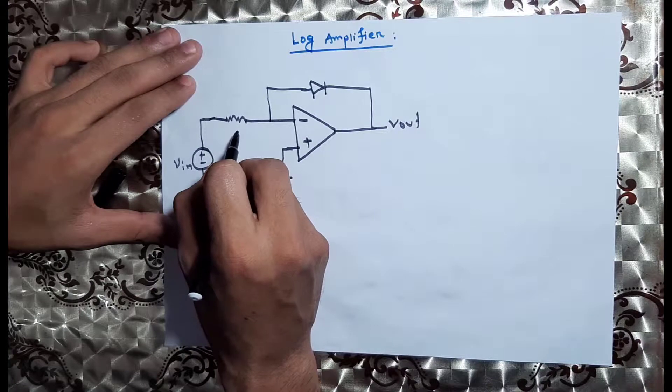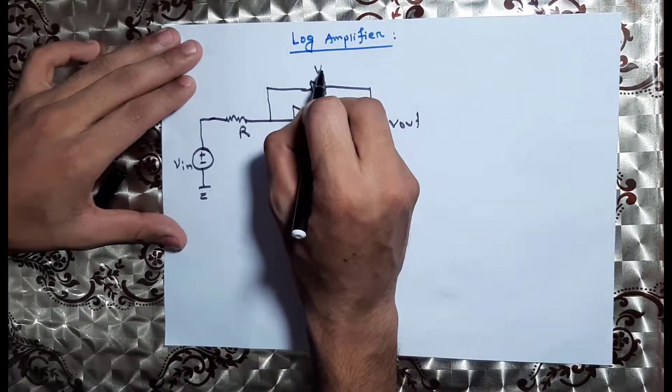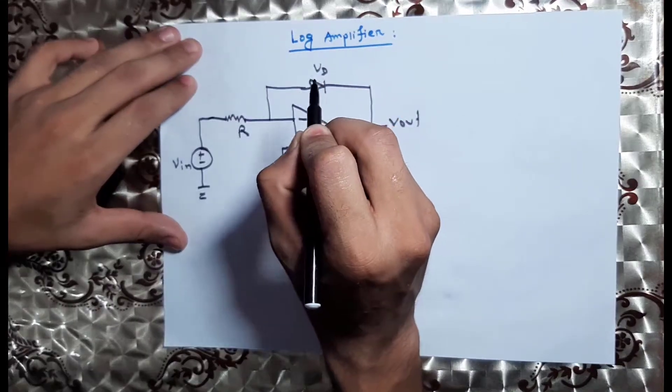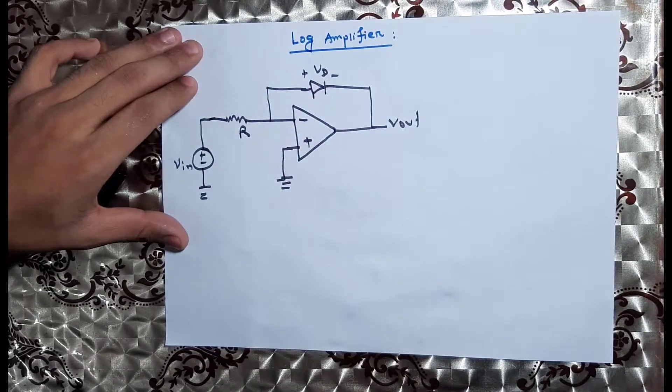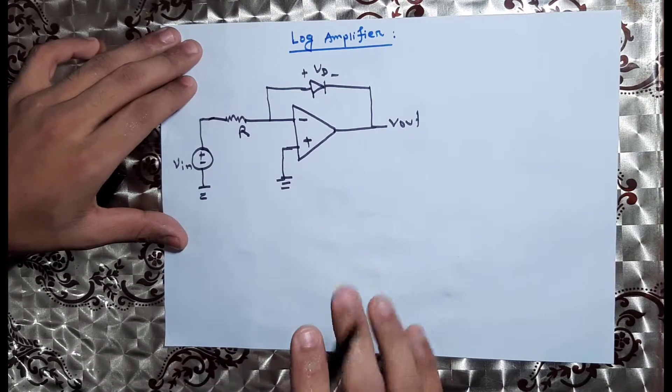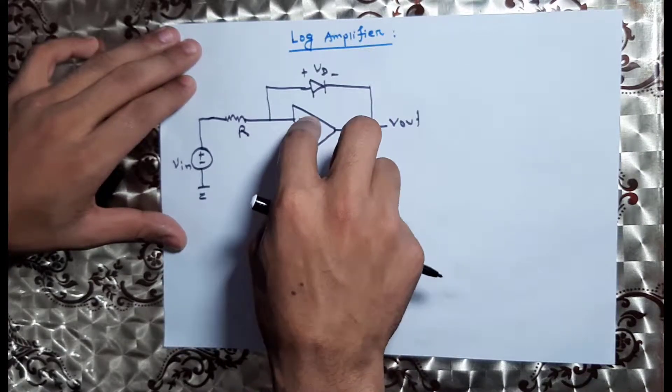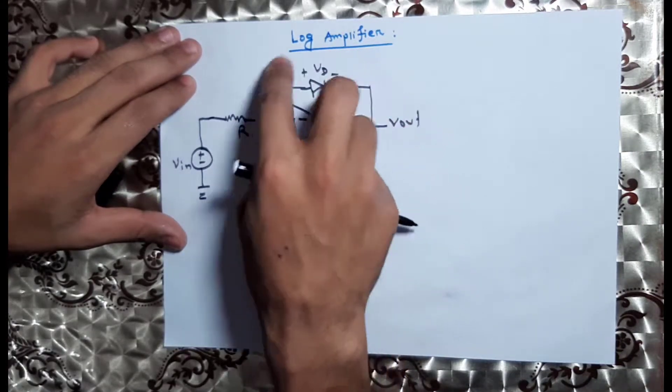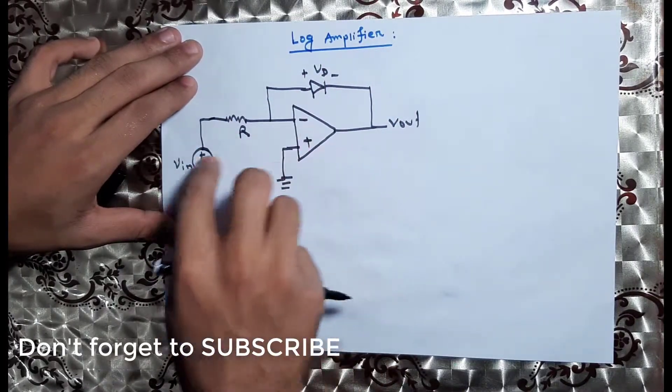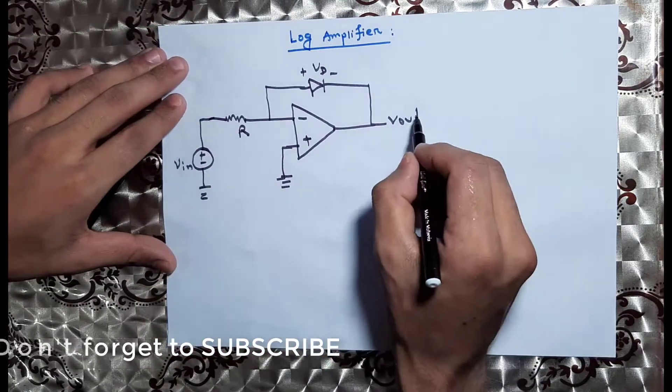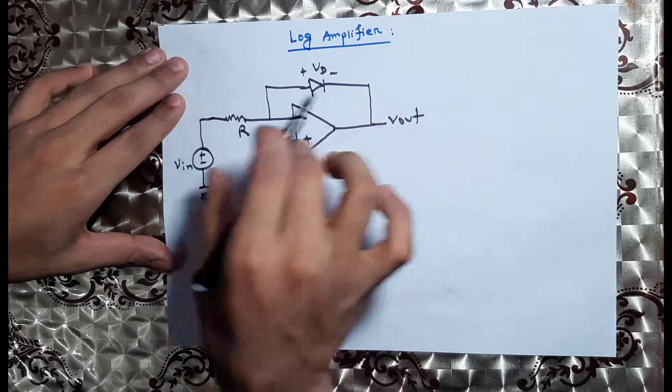We use the resistance R. VD is the forward voltage across the diode. The inverting terminal is the feedback path - this is the way we use the diode with negative feedback. We use the inverting terminal input supply and the output voltage output.